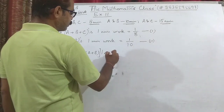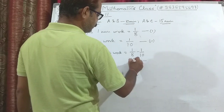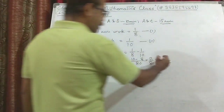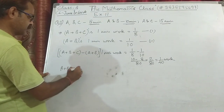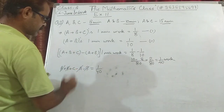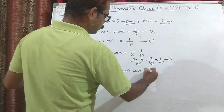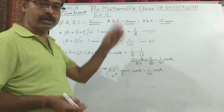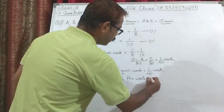Subtracting: (A + B + C) minus (A + B) one-minute work equals 1/8 minus 1/10. LCM of 8 and 10 is 80, giving (10 minus 8)/80 = 2/80 = 1/40. Opening the bracket: A and A cancel, B and B cancel, leaving C's one-minute work = 1/40. By the second law, C completes the work in 40 minutes.